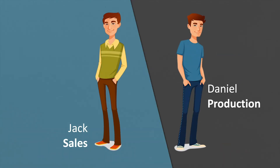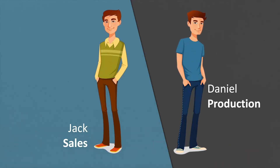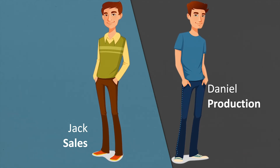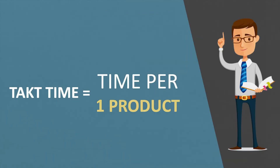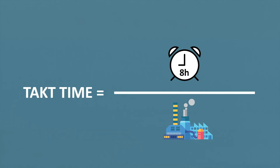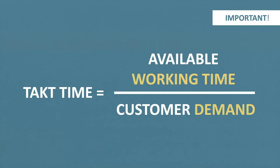With the help of Jack and Daniel we are finally able to calculate the takt time. The takt time is the period of time in which we have to produce one pen in order to fulfill the customer request within the available working time. The calculation of the takt time is as follows: the takt time equals the available working time divided by the customer demand.